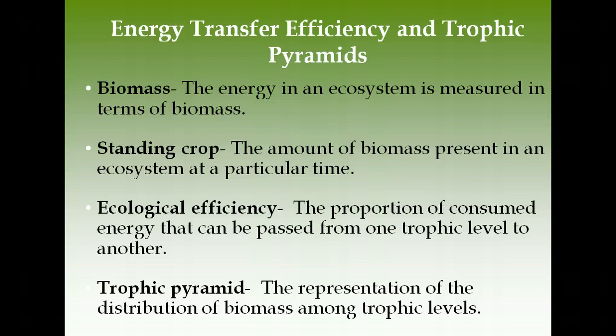Slow-growing forests have low productivity, so they don't produce much biomass quickly. However, a long-lived slow-growing forest has a high standing crop because trees have accumulated over time. The opposite is algae: they have very high productivity and a high growth rate, but because primary consumers eat them so quickly, the standing crop — total biomass at any moment — is actually very low. Make sure you understand the difference; it's on pages 64–65.